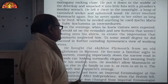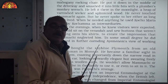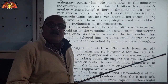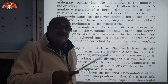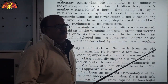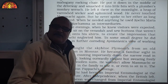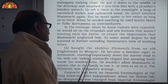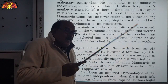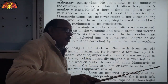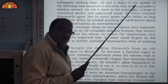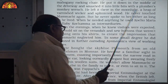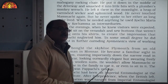He bought a sky-blue Plymouth from an old Englishman in Ayemenem — a vintage car. But he was so frustrated that he never allowed anyone to use it. He became a family aside in Ayemenem, driving importantly down the narrow road in his white car, looking outwardly elegant but sweating inside his woolen suit despite the summer season, just to show off. He would not allow Mamachi or anyone else to use or even sit in the car.